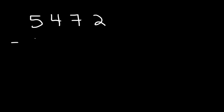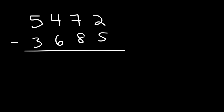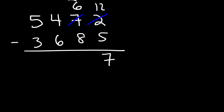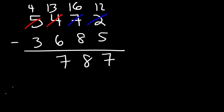Let's try one more example: 5,472 minus 3,685. So 2 minus 5 is negative 3, so we need to borrow a 1 from the 7, making that 6, and the 2 becomes 12. So 12 minus 5 is 7. And 6 minus 8 is negative, so let's borrow another 1 from the 4, changing that to 3, and 6 becomes 16. So 16 minus 8 is 8. Then 3 minus 6 can't be done, so we take a 1 from the 5, making that a 4, and 3 becomes 13. Now 13 minus 6 is 7, and 4 minus 3 is 1. So the answer is 1787.